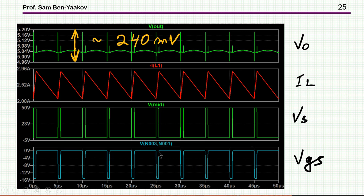This is the gate voltage. This is the midpoint, the midpoint between the transistor and the diode, switching between 0 and 50 volts. This is the inductor current going up and down, up and down. And here is the output. And indeed we do see these spikes now.